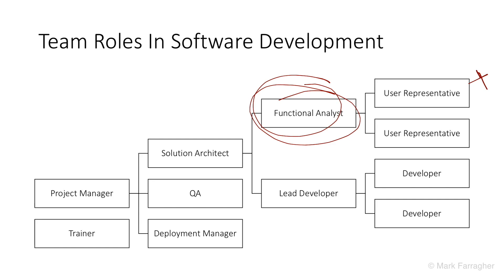That person is the functional analyst. The functional analyst takes the input from the user representatives, gathers it, and creates a functional requirements document — a fairly large, complete functional specification of what needs to be built, but purely functional. It will only express the eventual software in terms like: there needs to be a component that does this, or a black box where you put this in and this comes out, or a user interface with at least three buttons and two lists. It's all very abstract.